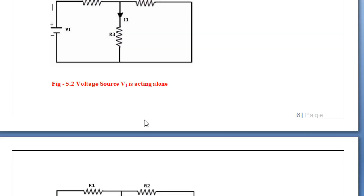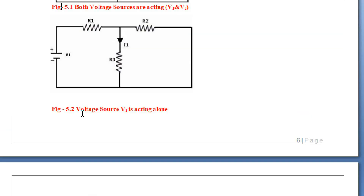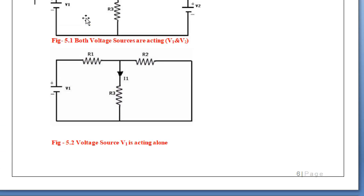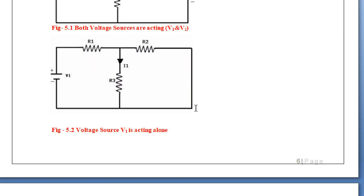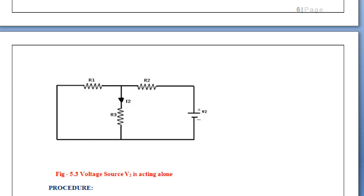The second circuit indicates the voltage source V1 is acting alone. In the first figure two sources are acting, but in the second only one source is acting and the other source is shorted. While doing the superposition theorem, if you want to replace a voltage source, it should be replaced with a short circuit, and the current source is replaced with an open circuit. Here we have both voltage sources, so we are making a short circuit. In the third figure, voltage source V2 is acting alone and V1 is short circuited.